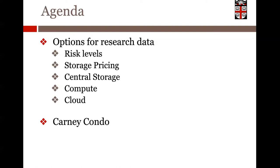I've got really two agenda items for today. One is to talk about what options you have for research data, taking it from beginning to end. Start with risk levels — that's really where we start when talking about research data — then pricing, some central storage options, some compute options, where we are with the cloud in terms of research, and an overview of the Kearney condo.